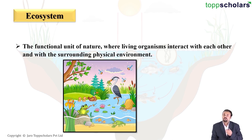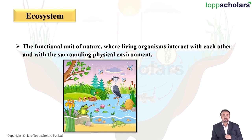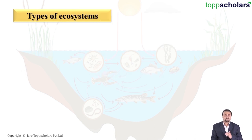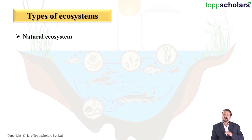This particular area where all these interactions — the interactions between biotic components, and the interactions between abiotic and biotic components — are occurring, is called an ecosystem. The functional unit of nature where living organisms interact with each other and with the surrounding physical environment is called an ecosystem. The term ecosystem was coined by a very famous scientist called A.G. Tansley.